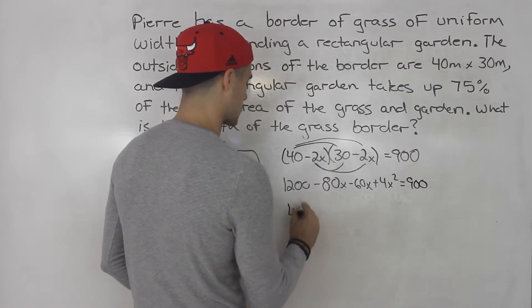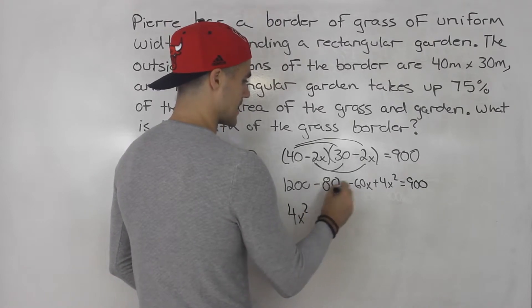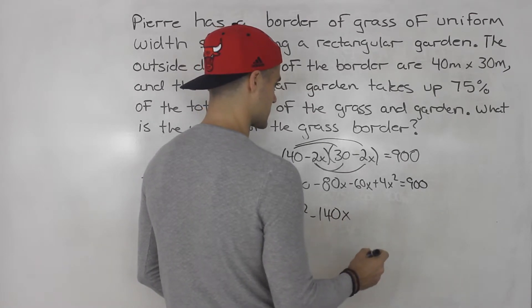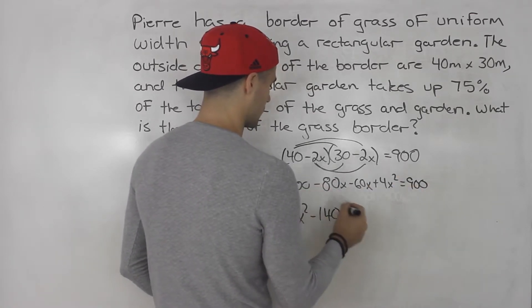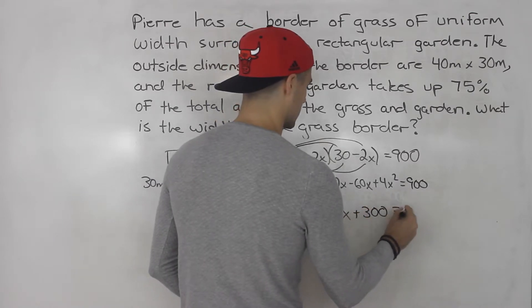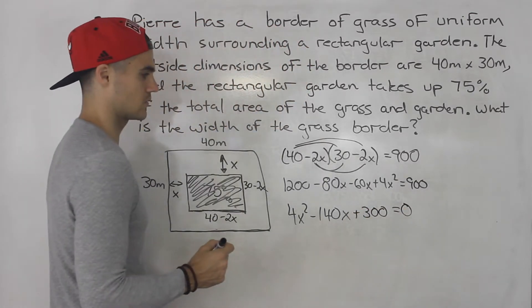Let's bring this over. So we'll have 4x squared minus 80x minus 60x, that gives us minus 140x. Then bring the 900 over. 1200 minus 900 gives us 300. And that is going to equal 0.